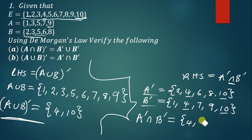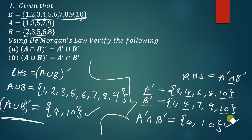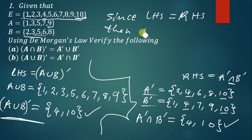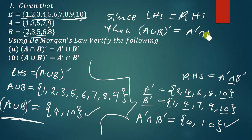Since the left hand side (A∪B)' = {4, 10} is equal to the right hand side A'∩B' = {4, 10}, we can say: since the left hand side is equal to the right hand side, then (A∪B)' = A'∩B'. That is De Morgan's second law verified.